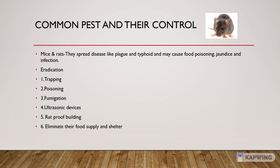Next is Mice and Rats. They are very common. They spread diseases like plague and typhoid and may cause food poisoning, jaundice and infection. Control methods: 1. Trapping, which is a conventional method. 2. Poisoning. 3. Fumigation. 4. Ultrasonic devices, which are modern devices available in the market. 5. Rat-proof building construction. 6. Eliminate their food supply and shelter.